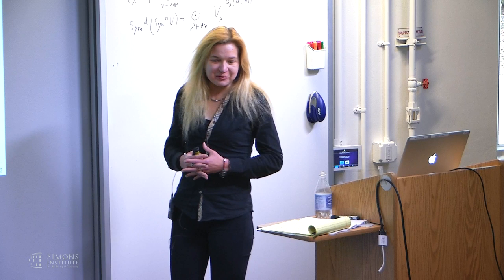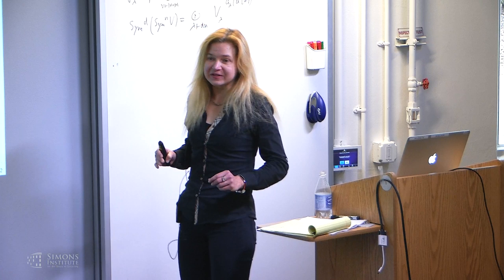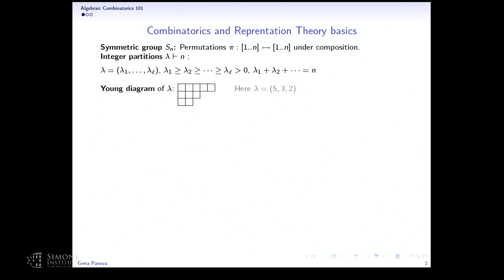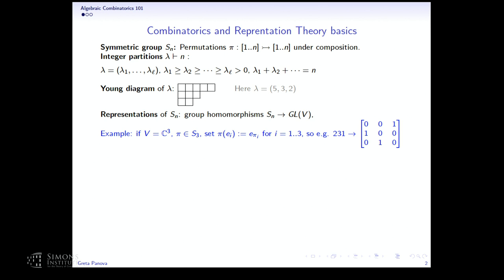Let me give you some basics from algebraic combinatorics, which is my field and my perspective on these problems. The basic objects in algebraic combinatorics are permutations and integer partitions. The symmetric group S_N will be featured quite widely, and the general linear group as well. These are things you've already seen in previous talks. The Young diagram of a partition is just an arrangement of boxes, and it's important because it's a nice way to encode highest weight vectors and to visualize things we know about representation theory.